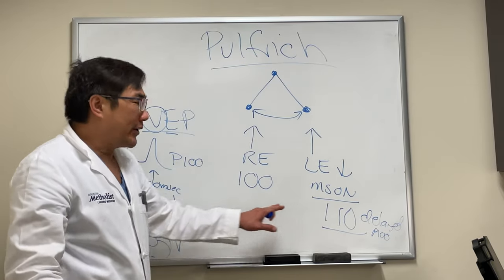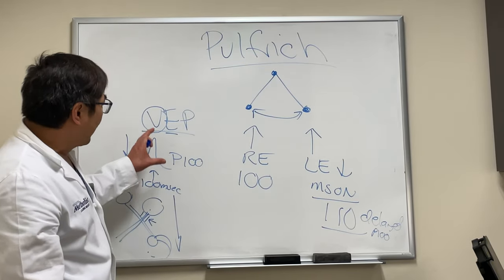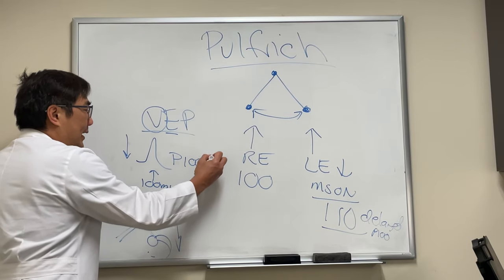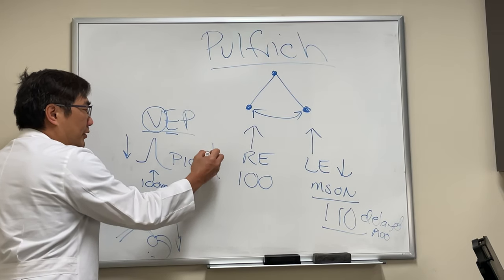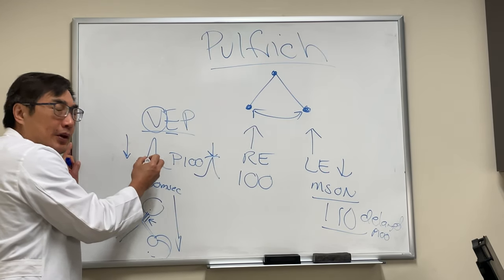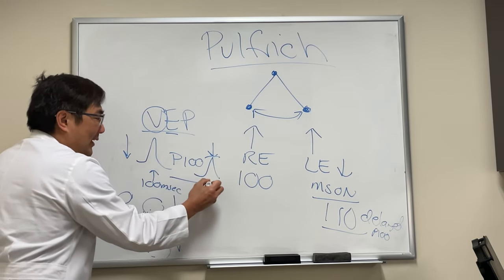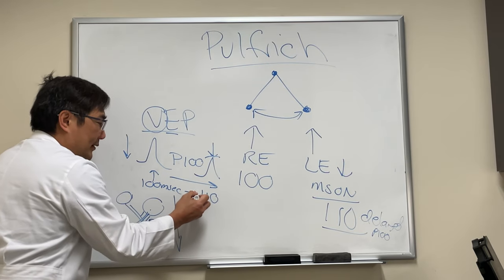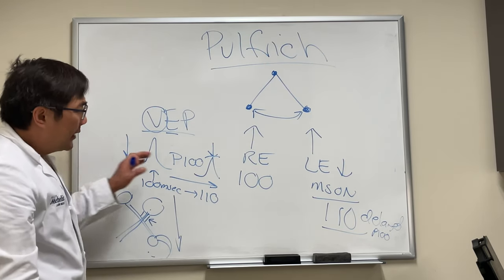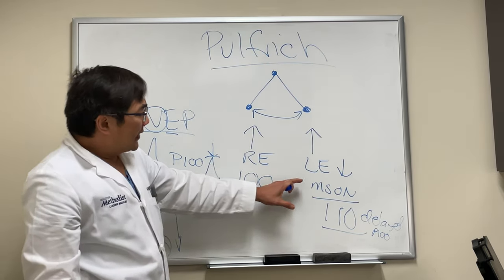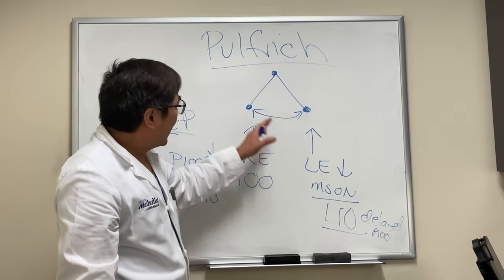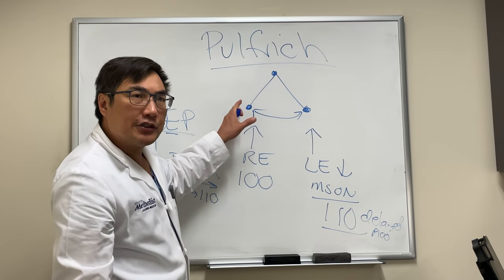When you have optic nerve damage, you can either have a decrease in the amplitude of the P wave, or you can have a delay — it takes longer to get the signal there. That delay between the two eyes is what causes the Pulfrick phenomenon.